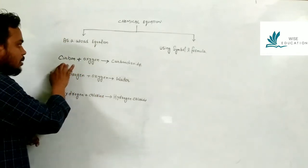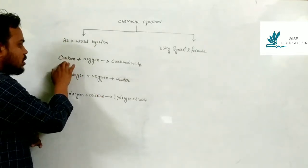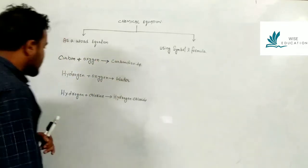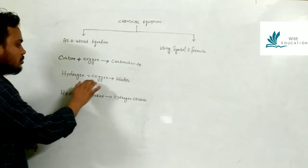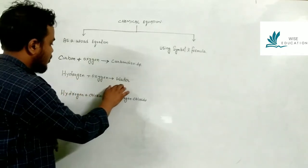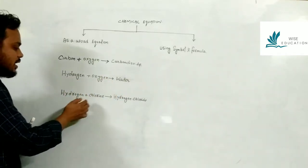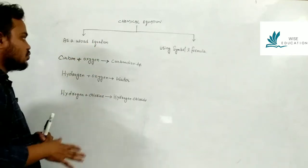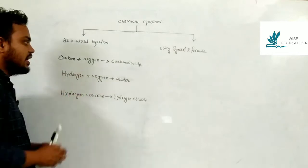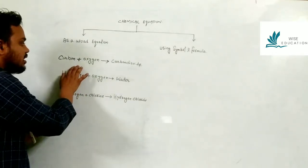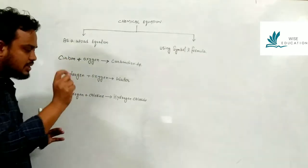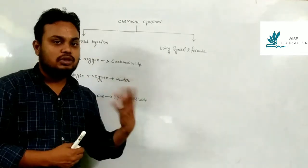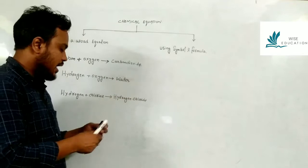For example: carbon and oxygen react to form carbon dioxide. Hydrogen reacts with oxygen to form water. Hydrogen reacts with chlorine to form hydrogen chloride. In word equations you write the names of the reactants and they are separated by a plus sign. If there are more than one product, you can add a plus sign to separate them as well.